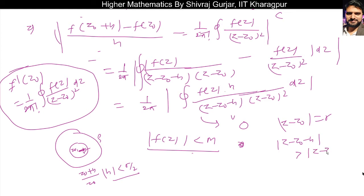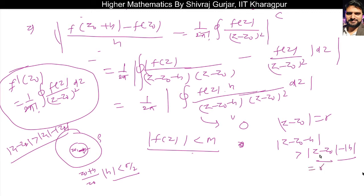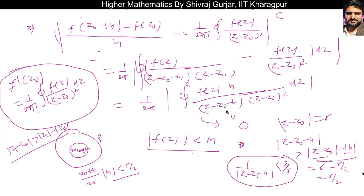Here z1 is (z minus z-naught) and z2 is h. Since modulus of (z minus z-naught) equals r on the circle and h is less than r/2, this whole modulus will be greater than r/2. So 1 divided by modulus (z minus z-naught minus h) will be less than 2/r, meaning that term is bounded. Combined with the fact that modulus of (z minus z-naught) equals r on the circle, this gives the bound.